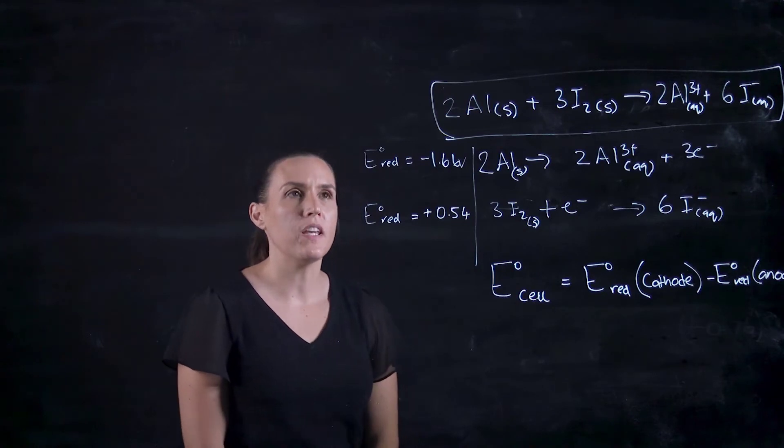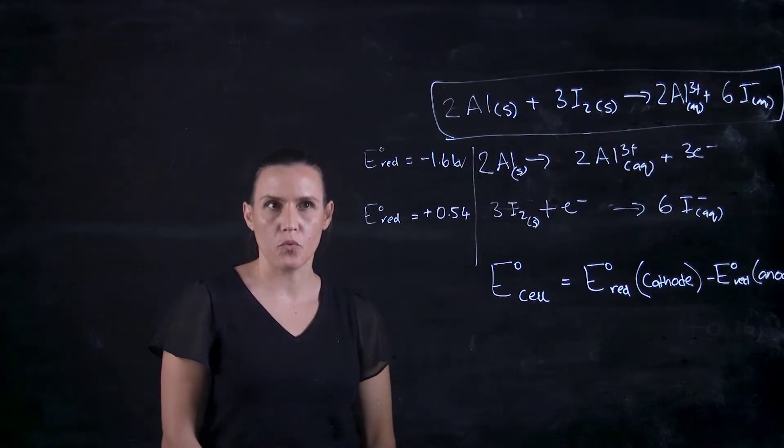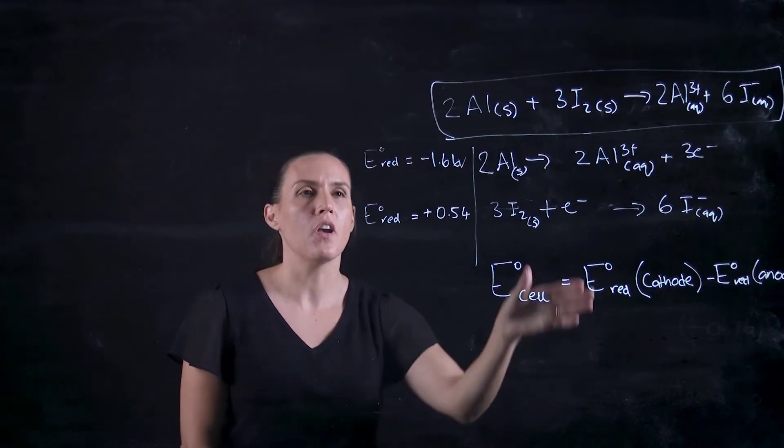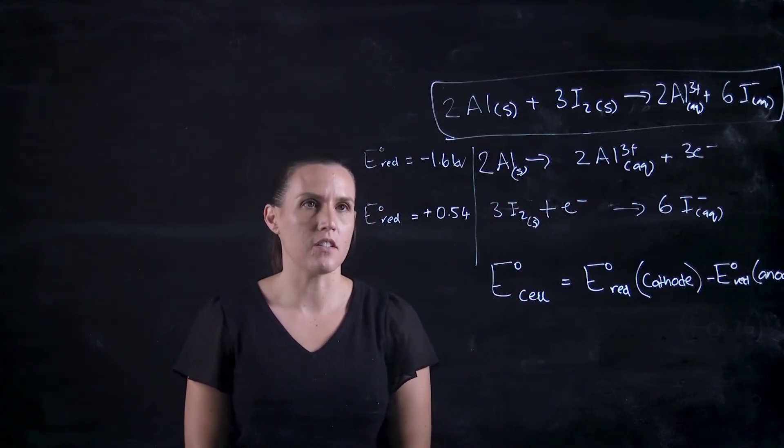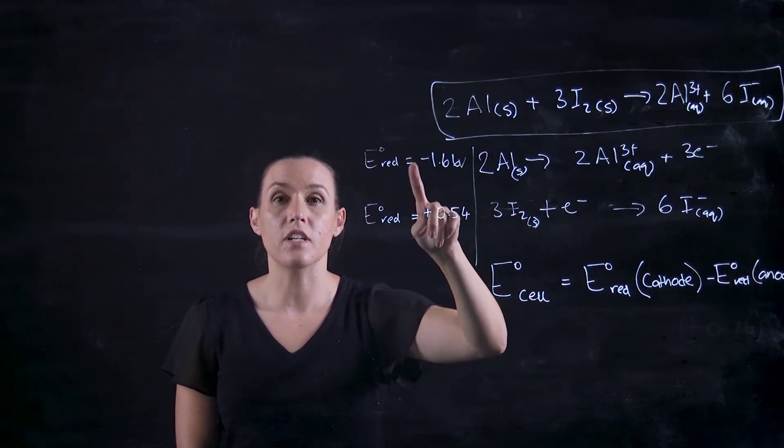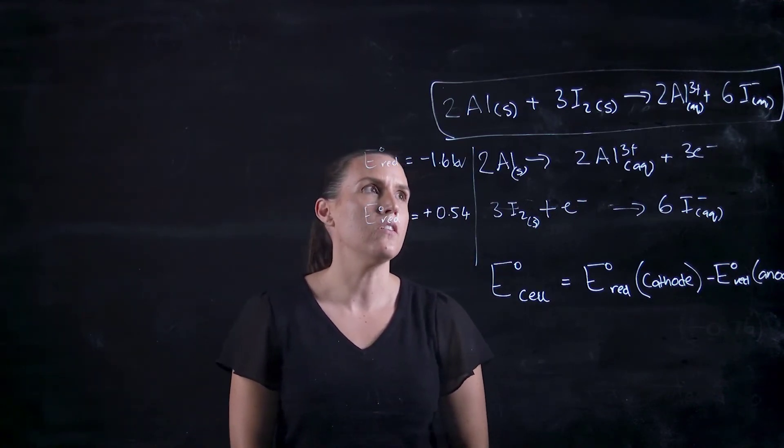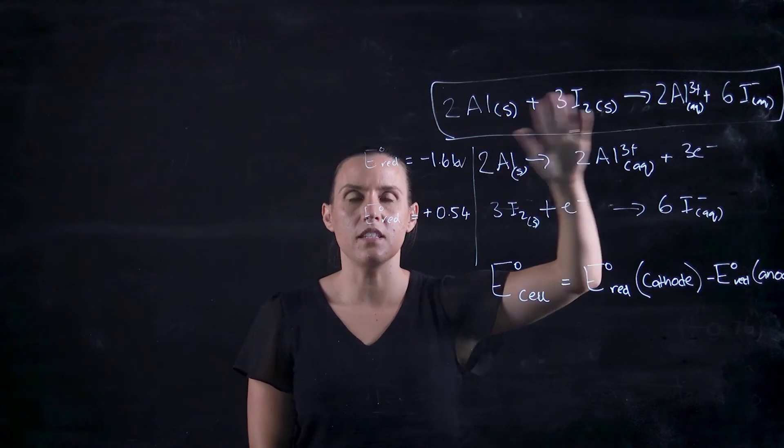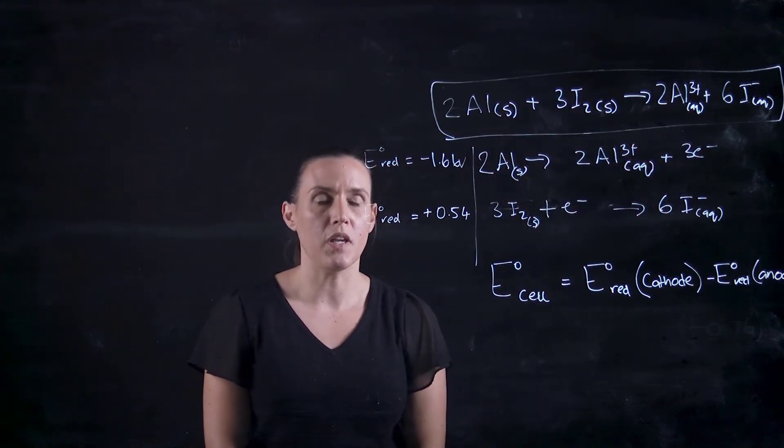With this example here, we have our equation written out and we are given our two half reactions that make up that reaction. With those half reactions, we're given the E naught of the reduction potential. Looking at these two, looking at the way that they're existing up here - whether or not they're being oxidized or being reduced.